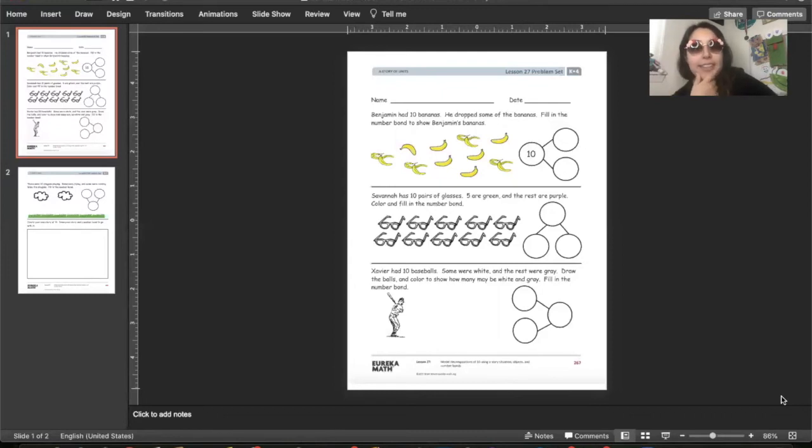Xavier had 10 baseballs. Some were white and the rest were gray. Draw the balls in color to show how many may be white and gray, and fill in your number bond. All the information you have. That one you get a little creative with.